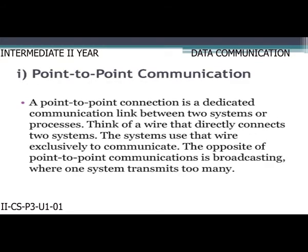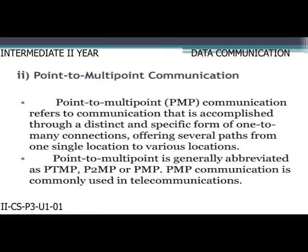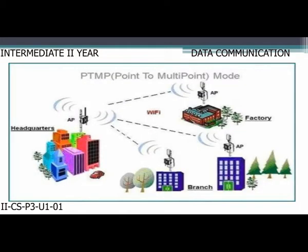Point-to-point communication is a dedicated communication link between two systems or processes — think of a wire that directly connects two systems used exclusively to communicate. The opposite is broadcasting, where one system transmits to many. Point-to-multipoint communication refers to one-to-many connections offering several paths from a single location to various locations, generally abbreviated as PTMP, P2MP, or PMP.